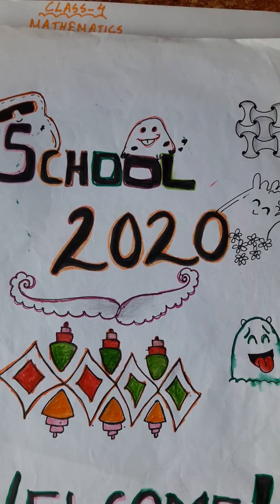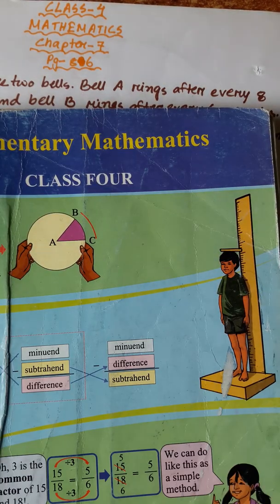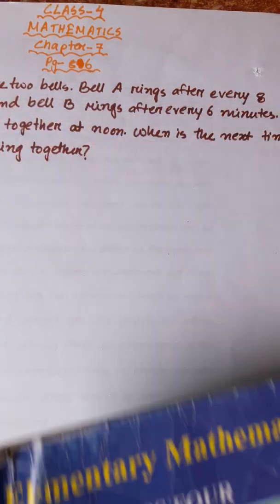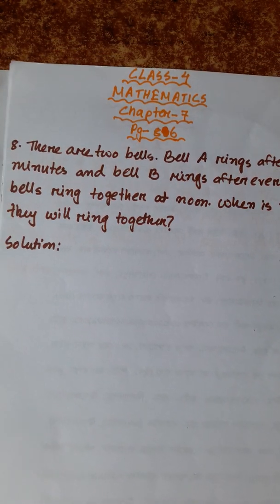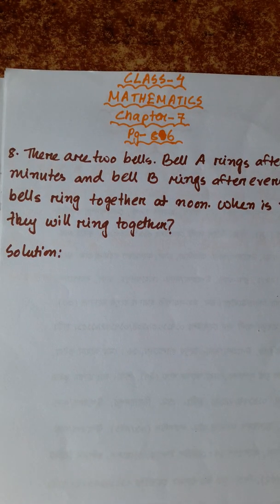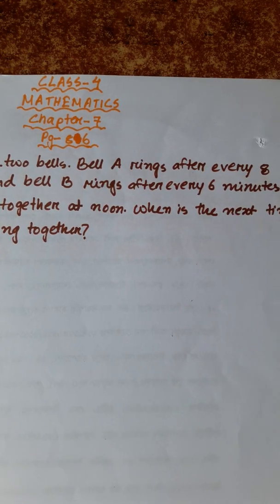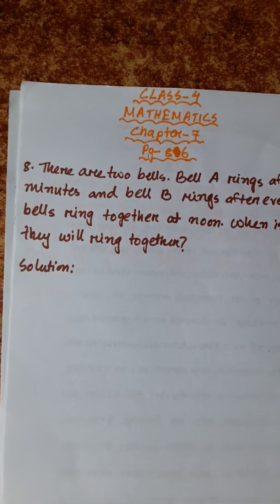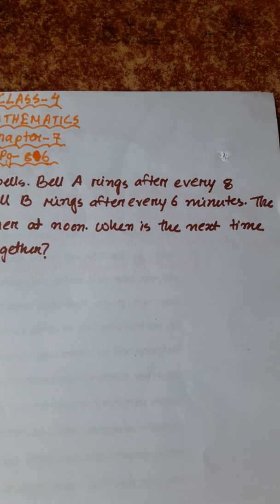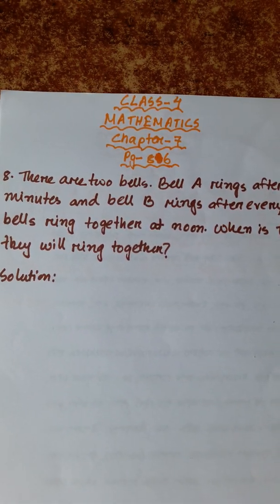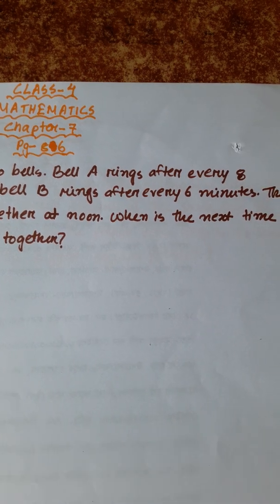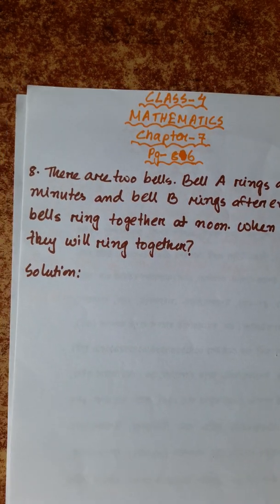Welcome to School 2020 at Camera Elementary Mathematics Class 4, Chapter 7. Chapter 7, page 86, number 8: There are two bells. Bell A rings after every eight minutes and Bell B rings after every six minutes. The bells ring together at noon. When is the next time they will ring together?